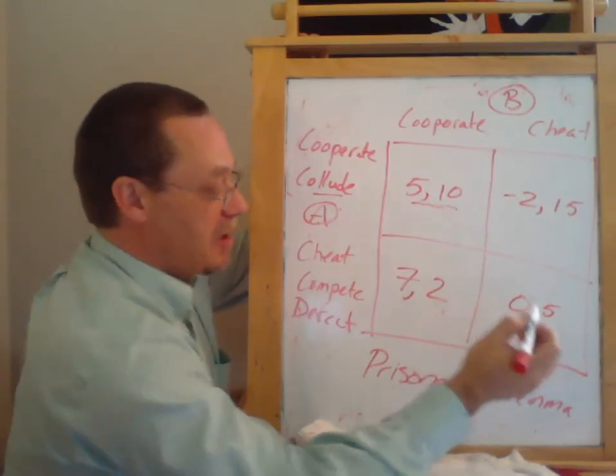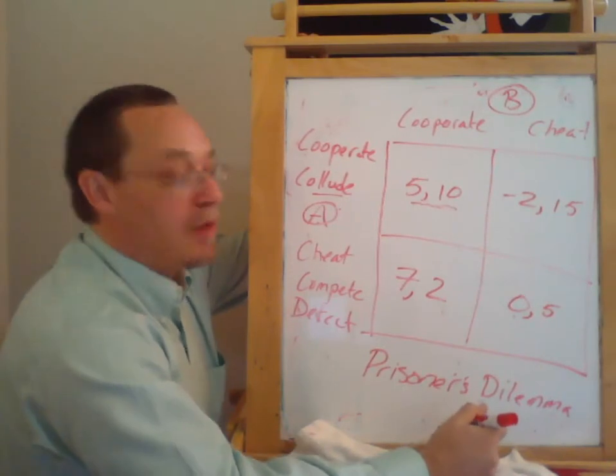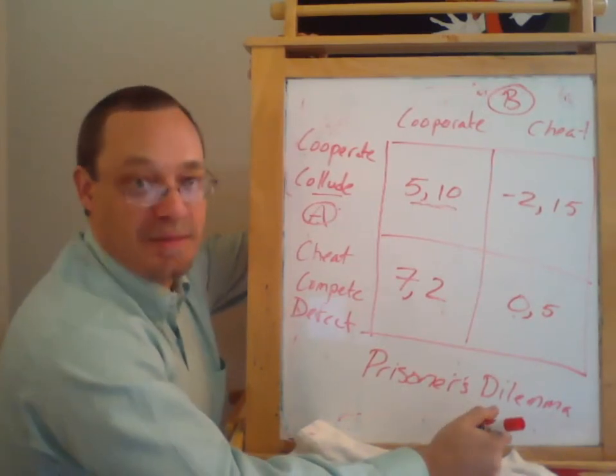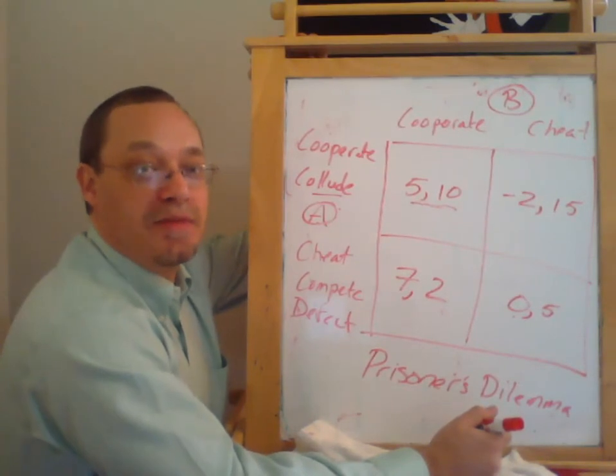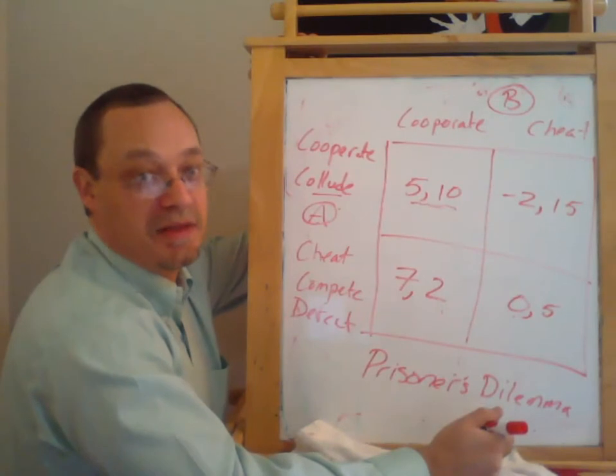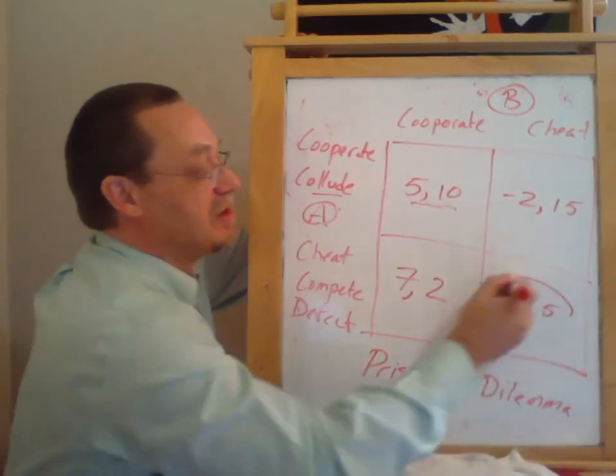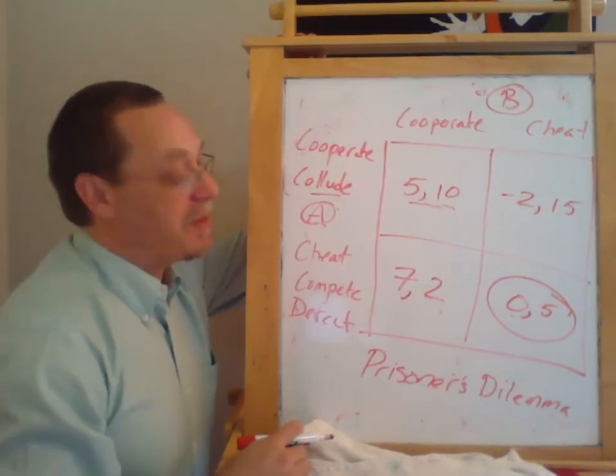So the Prisoner's Dilemma is a particular game where each player has a dominant strategy. And the dominant strategy is one that is to be aggressive towards the other player or to cheat on the other player. And it leads to an equilibrium that is worst, the worst possible outcome.